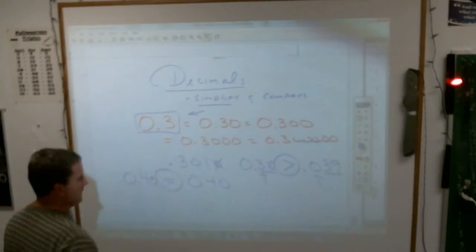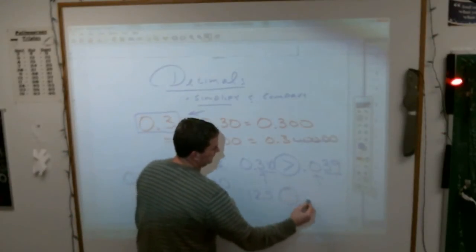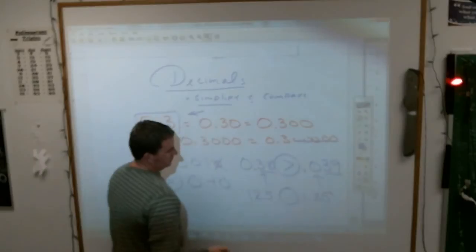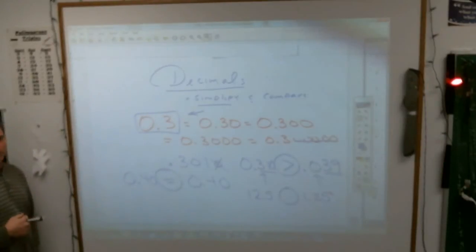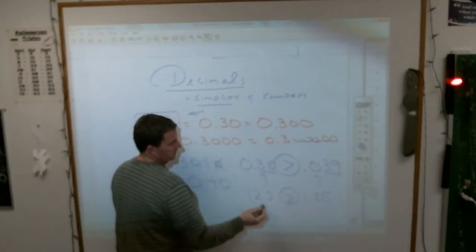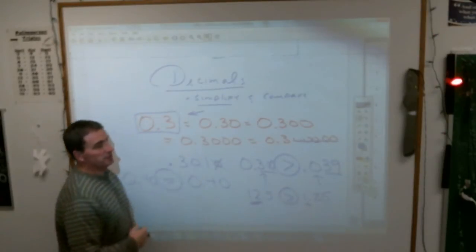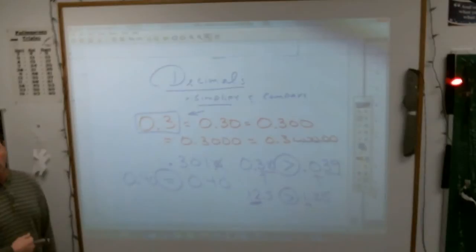How about this one? 12.5 compared to 1.25. It's a tough one there. Elijah says? 12.5. Yeah. First thing you look at is always the whole number. If the whole number is bigger, you don't have to worry about anything about the decimal because it isn't going to matter. 12 is bigger than 1 always and forever. I thought that was exciting.